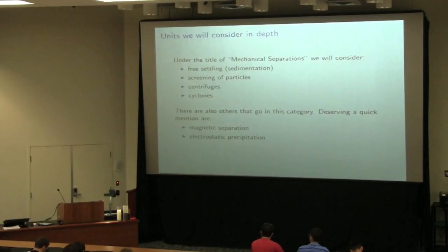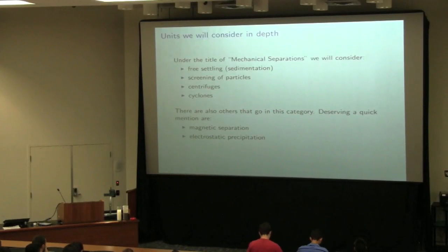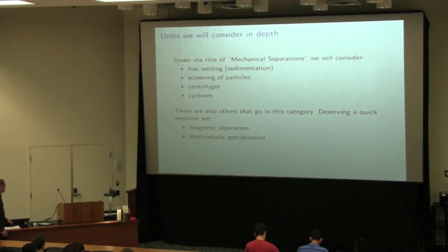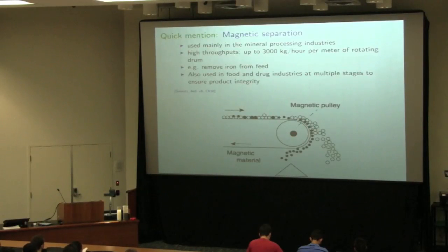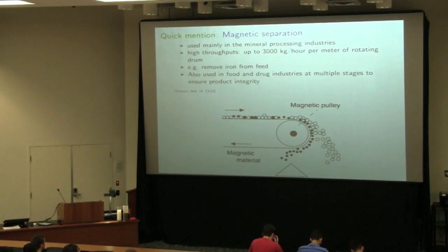Now, in the mechanical separation section, today's class will consider sedimentation. We'll look at screening of particles, then centrifuges and cyclones shortly after. That's about the next two weeks of material. I'll quickly mention two other separators raised in student papers: magnetic and electrostatic separations. Magnetic separation is very widely used in many industries, particularly in mineral processing. You can get extremely high throughputs — a typical throughput is about three tonnes per hour per meter of drum length.